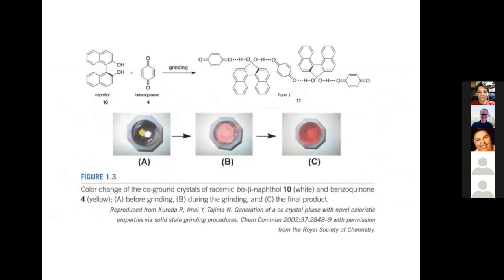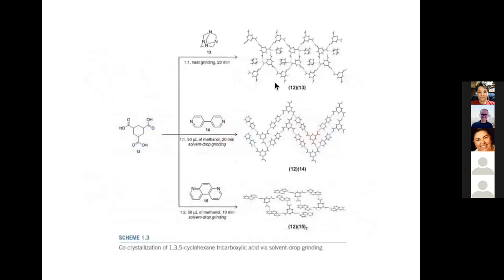Hay ejemplos donde se reportan rendimientos del 100% en 90 minutos por mecanoquímica versus 12 días a 160 °C por métodos convencionales. Inclusive hay reacciones que no se llevan a cabo en fase líquida pero sí bajo condiciones mecanoquímicas. También para macromoléculas y polímeros, la formación de complejos ordenados que no se logran en solución es posible mediante mecanoquímica.